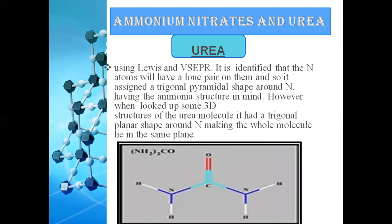Regarding the geometry of urea: using Lewis structure and VSEPR theory, the nitrogen atom has a lone pair, so it is assigned a trigonal pyramidal shape. However, when we look at the 3D structure of the urea molecule, it has a trigonal planar shape around nitrogen, which makes the whole molecule lie in the same plane.